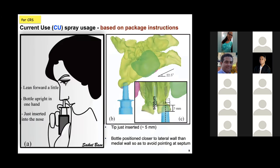To improve drug delivery, we first need to know how nasal sprays are currently being used. Based on the package instructions that come with most over-the-counter spray products, the patient is asked to lean forward a little, hold the spray bottle vertically upright, and insert it to a very shallow depth inside the nose. We interpreted these instructions digitally: the computational geometry of the nose was inclined forward by 22.5 degrees, the spray is kept vertical, and it penetrates 5 millimeters into the nose. We refer to this as the current use, or CU, protocol.